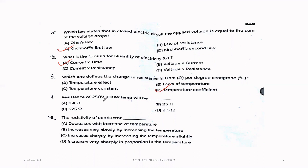Fourth question, resistance of 250 volt 100 watt lamp will be R equals V square by P. So, 250 square divided by 100, the answer is option C, 625 ohm.